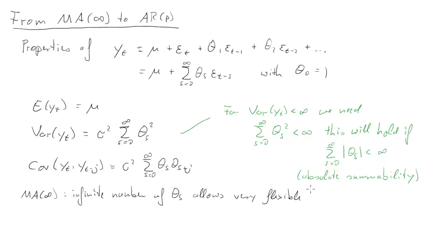If you have an infinite MA process, we have an infinite number of theta coefficients and that allows very flexible autocorrelation functions to be proxied by an infinite MA process. However, that is of limited value in practice. The reason for that is that in reality we need to estimate these theta s coefficients from a finite number of observations of Yt and that is impossible.